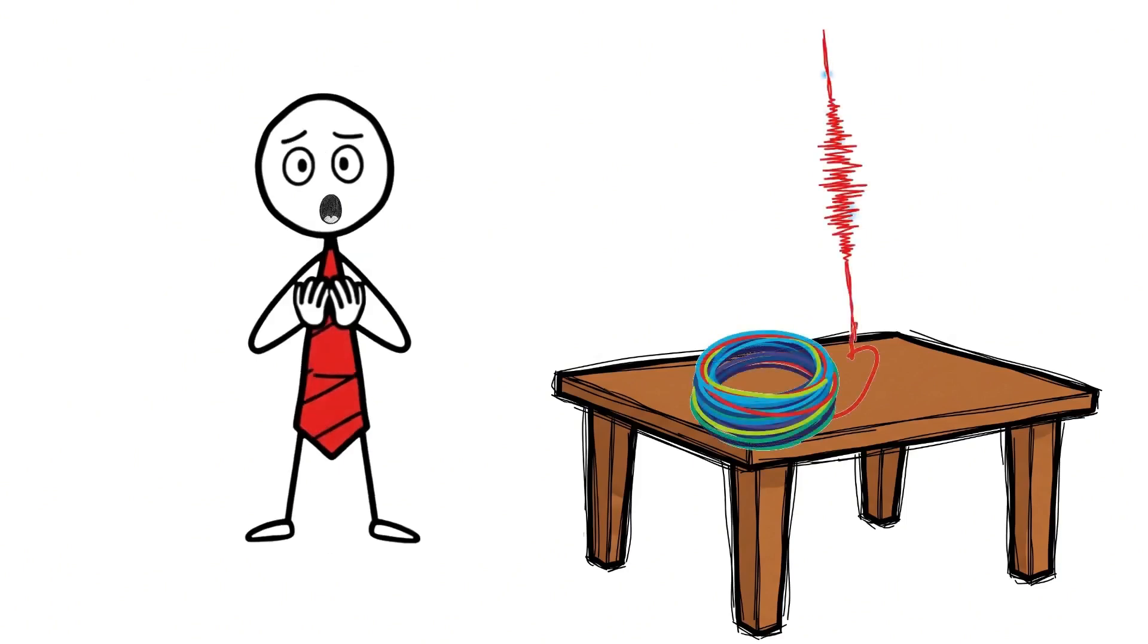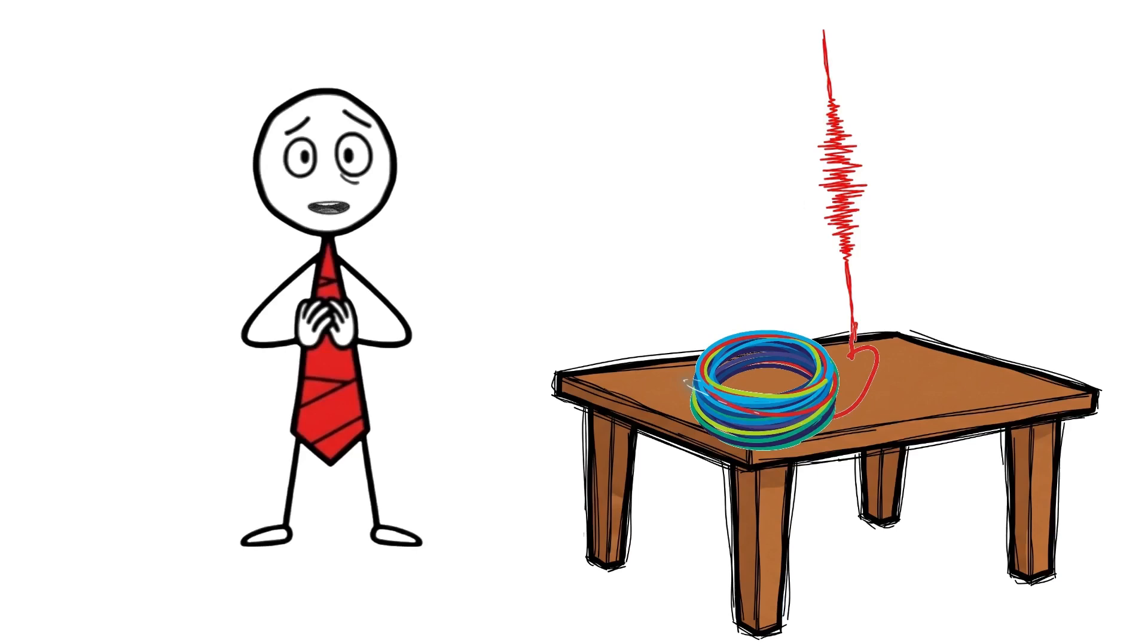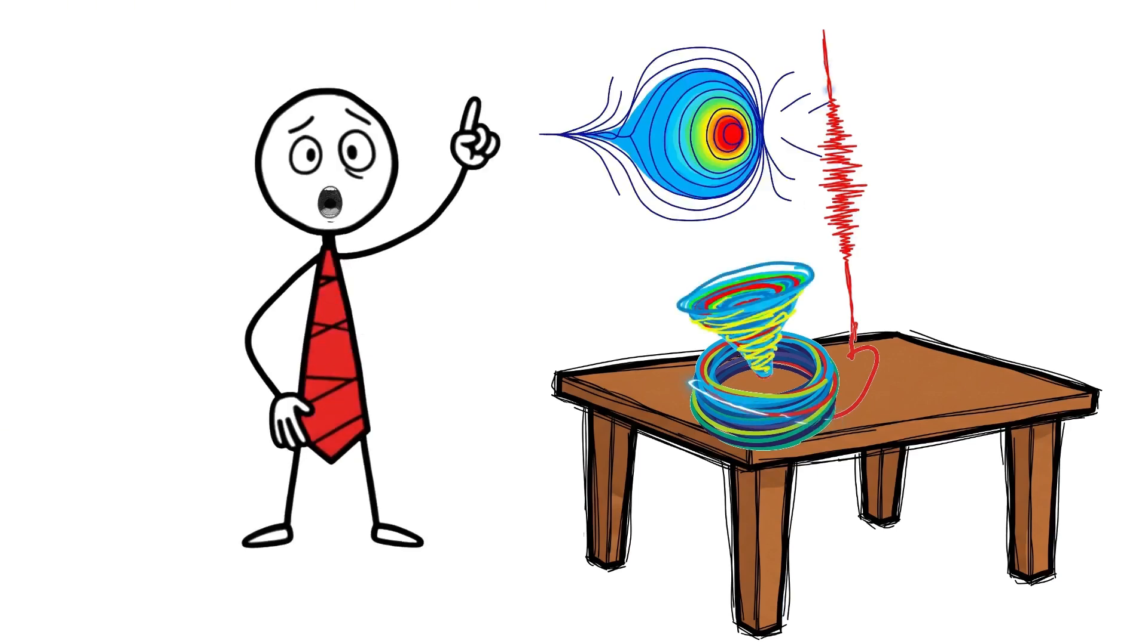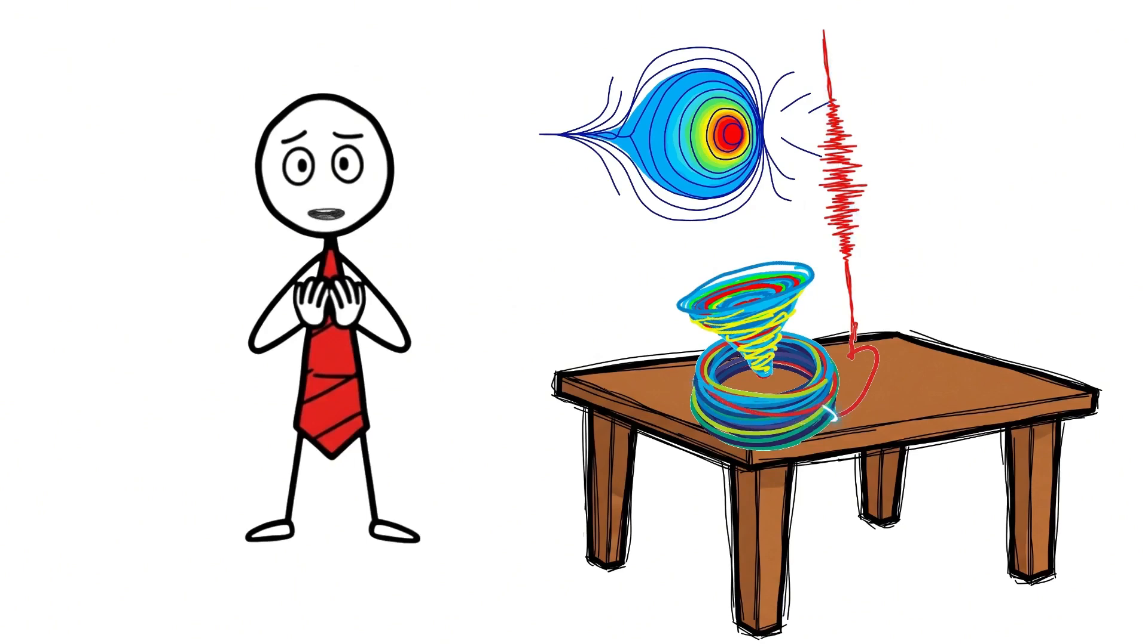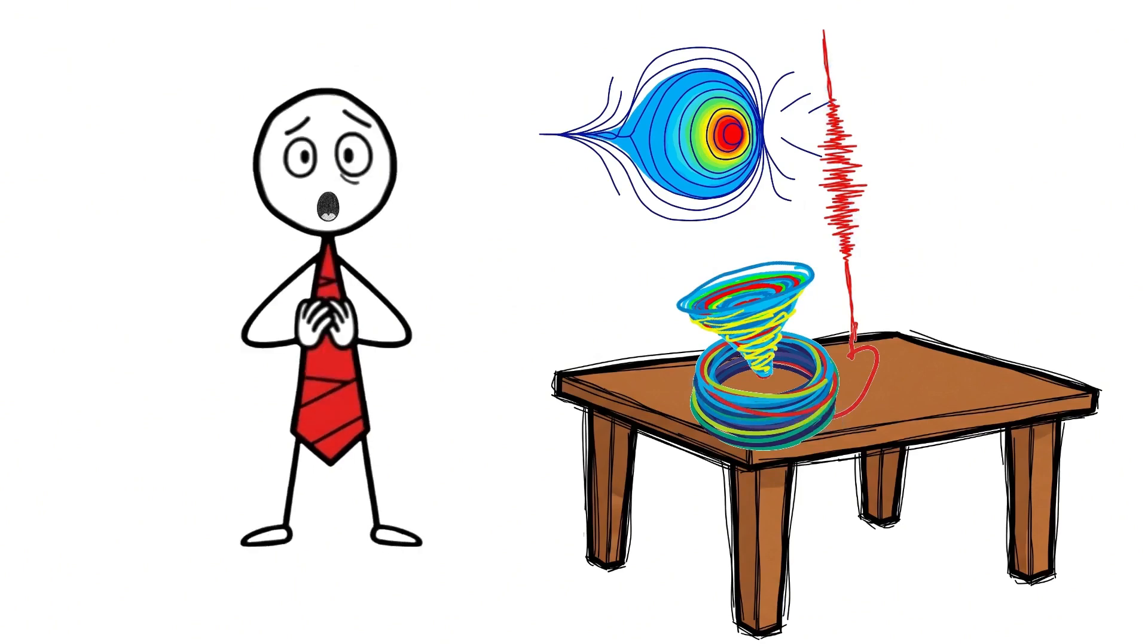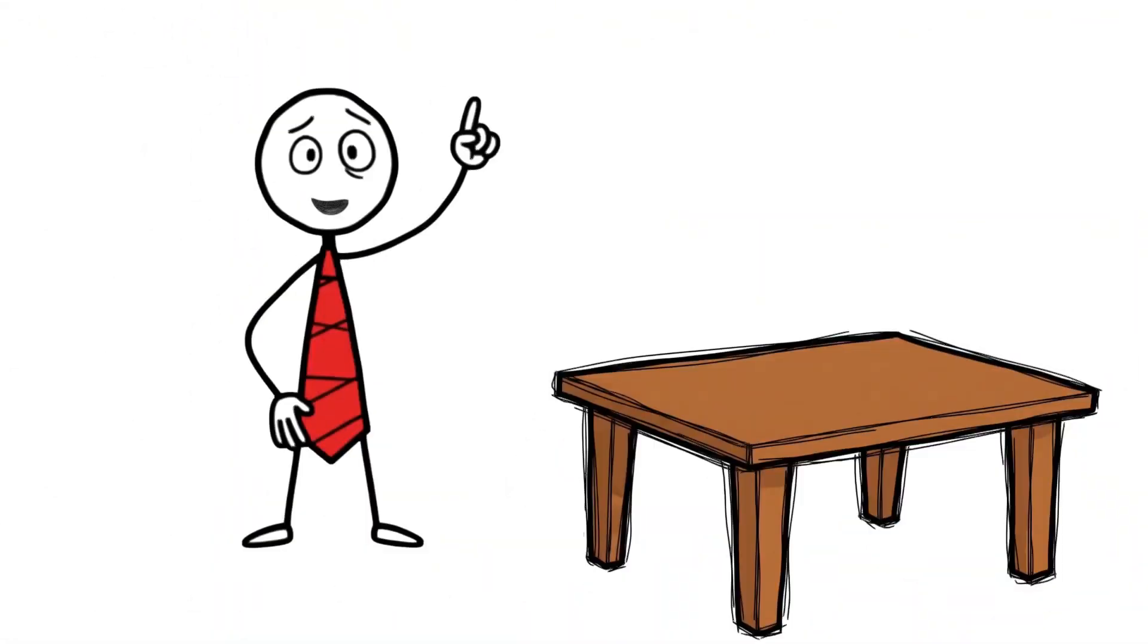First, we blasted that huge pulse of current into the copper coil. Anytime you run current through a wire, you get a magnetic field. Because our current was so huge and so fast, it created an enormous, rapidly changing magnetic field inside that coil.